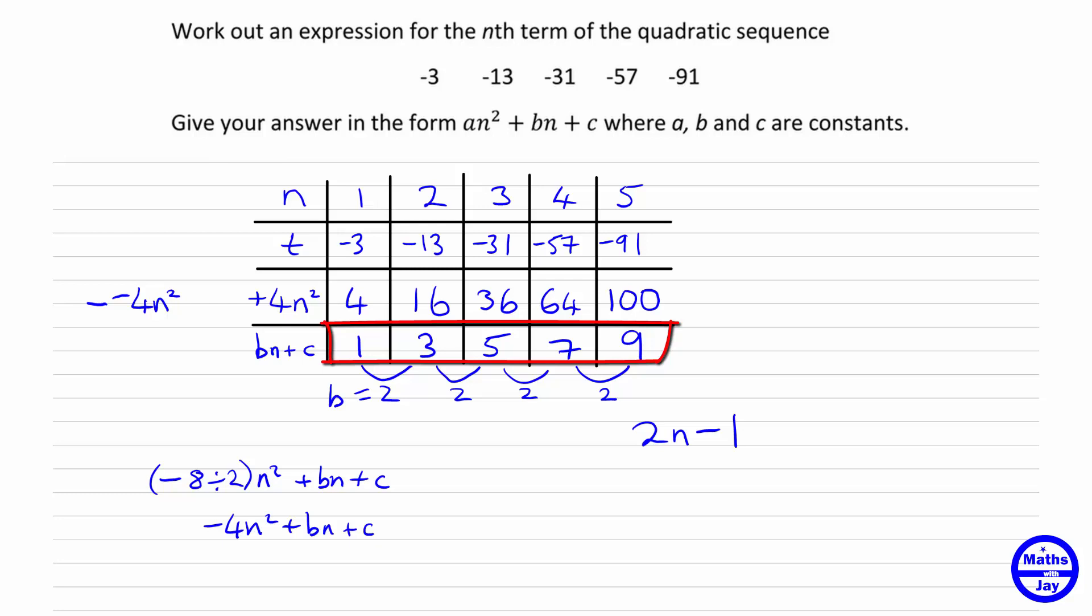We can check that by trying out a value of n. So if we try n is 3, 2 times 3 is 6. 6 minus 1 does give us 5, which is the third term. So now we can put the two bits together to get our formula.